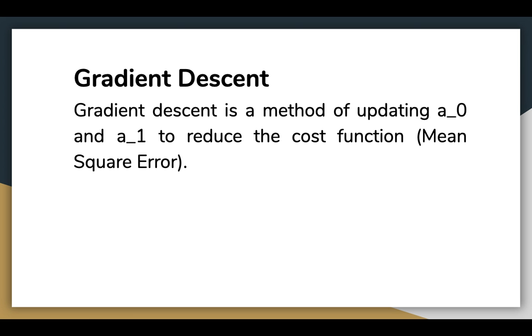The next important concept needed to know linear regression is gradient descent. Gradient descent is a method of updating A0 and A1 to reduce the cost function. The idea is that we start with some values of A0 and A1, and then we change these values iteratively to reduce the cost. Gradient descent helps us how to change the values.